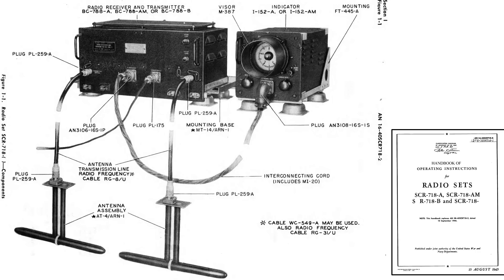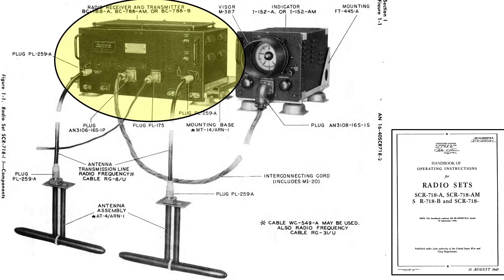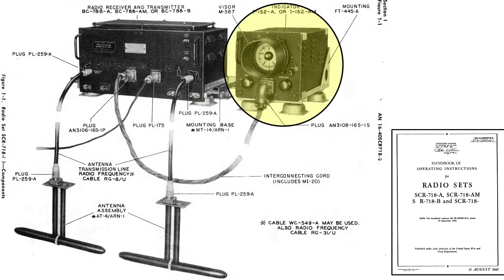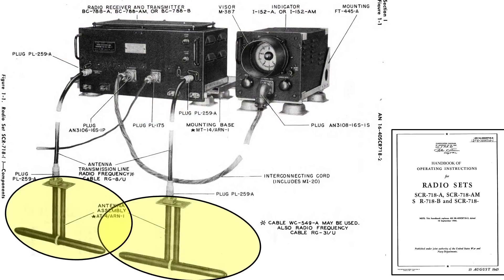This image shows the radar altimeter's components and connection cables from an August 1945 Operating Instructions Handbook for the SCR-718 system, including the receiver-transmitter, indicator, and antennas.